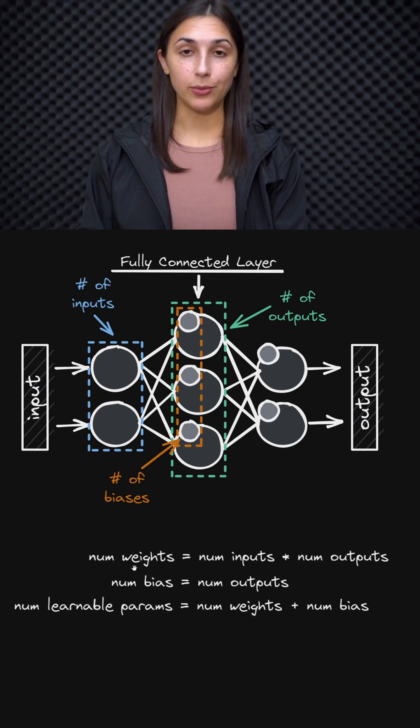Weights are one of the main learnable parameters within any given layer. To calculate the number of weights, we multiply the number of inputs to a given layer by the number of outputs from that layer.